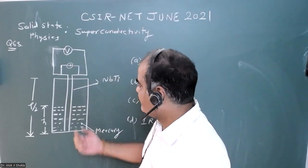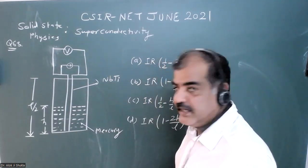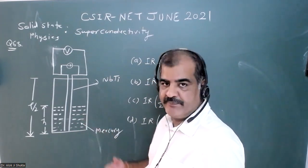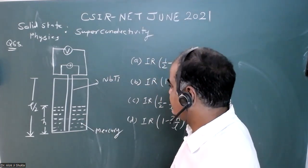this becomes superconducting. Once it is superconducting, the resistivity will go down to zero. They say out of these four options, which option is best suitable to describe the voltage across this wire?